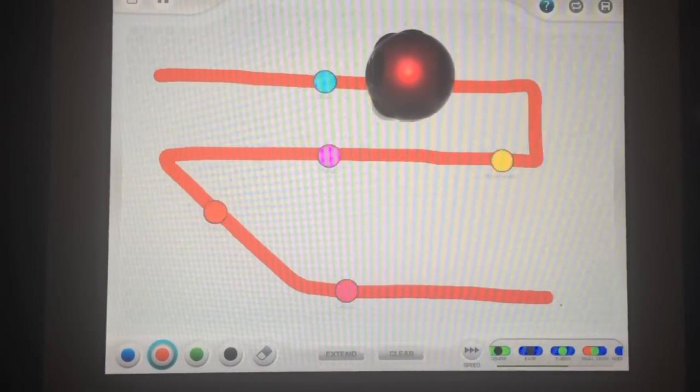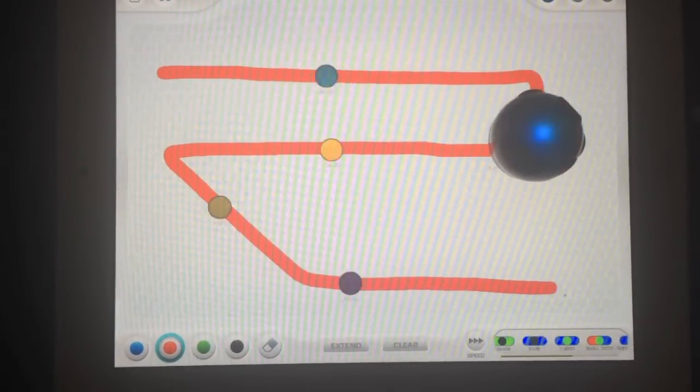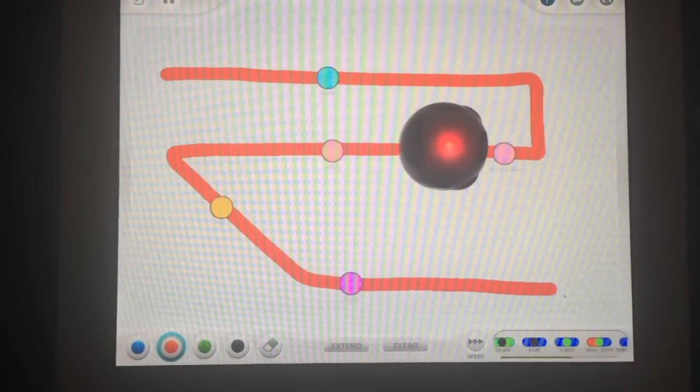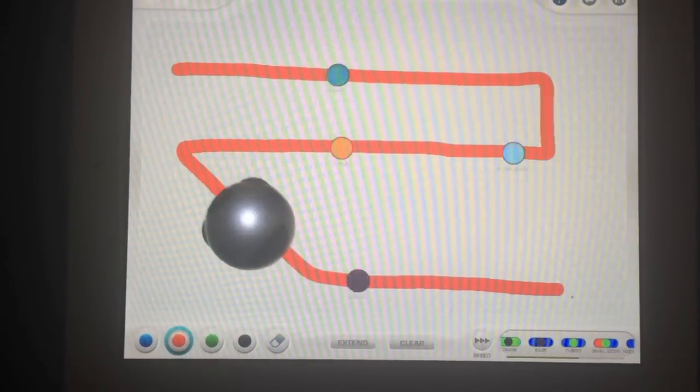The Ozobot is a robot that is programmed to read color codes. The Ozobot can be used for tracing lines. The color flashing orbits programmed the Ozobot to go fast, slow, spin, etc.